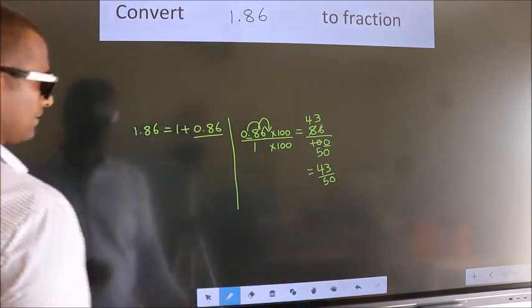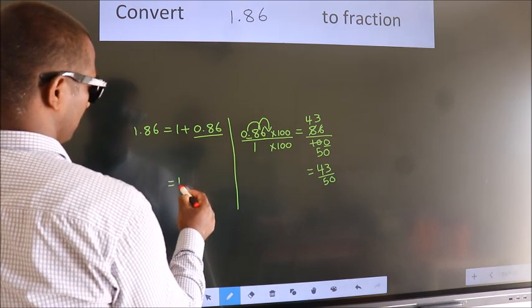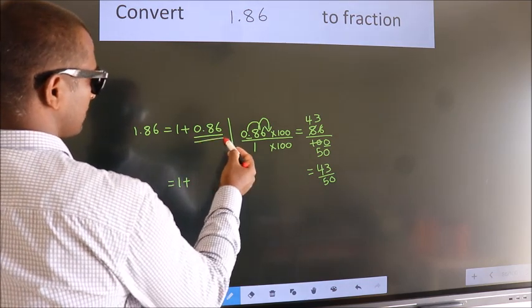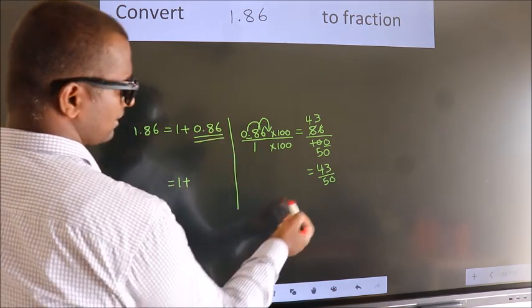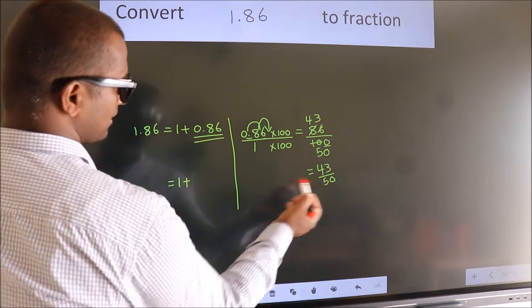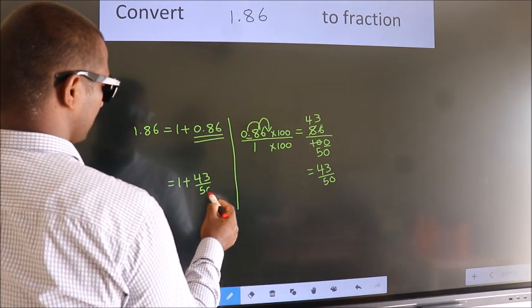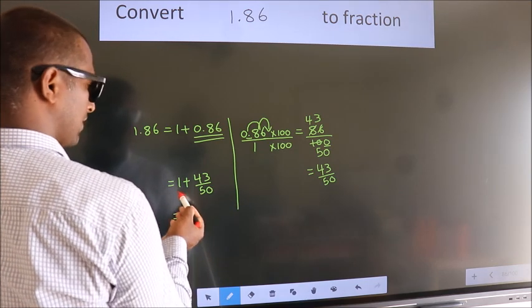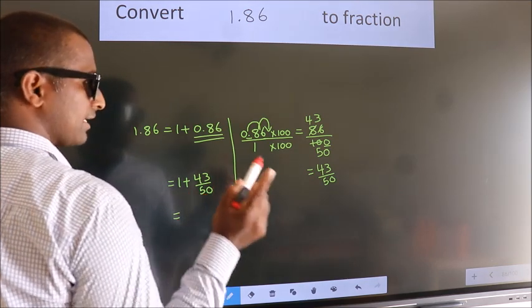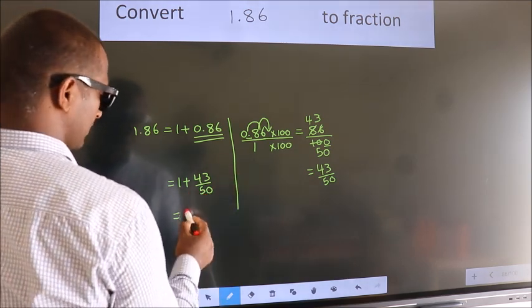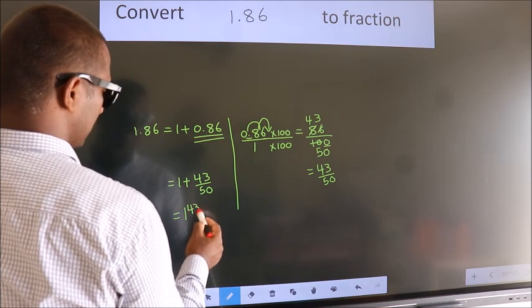Now here, 1 plus, in place of 0.86, we write this fraction 43 by 50. So 1 plus 43 by 50. In mixed fraction it is 1 43 over 50.